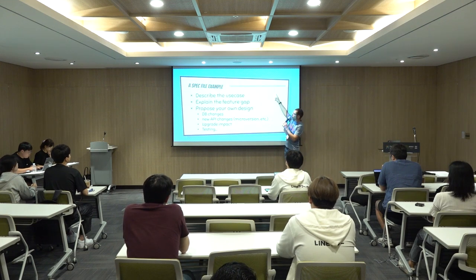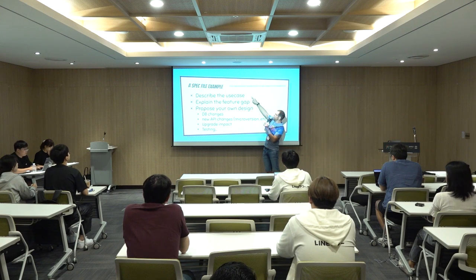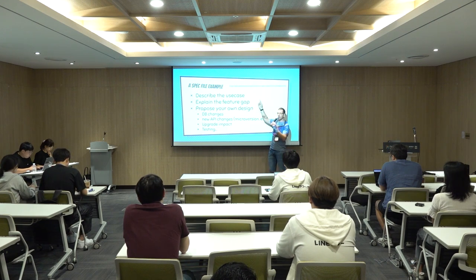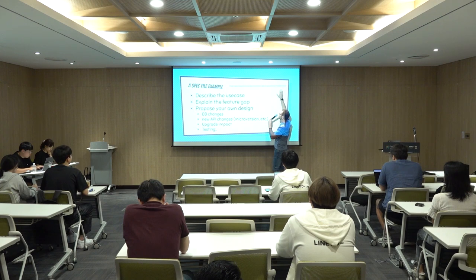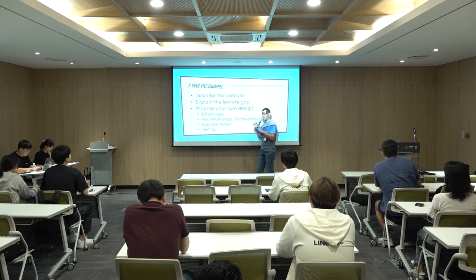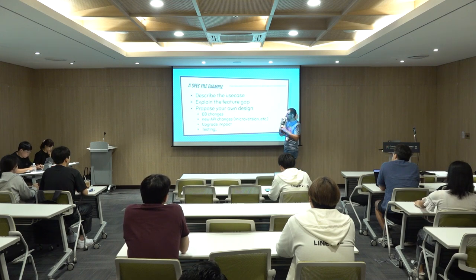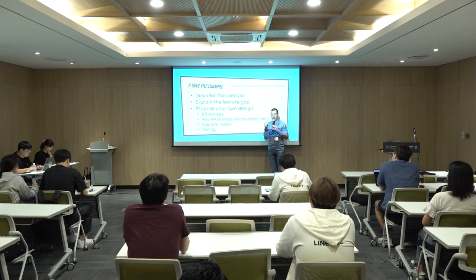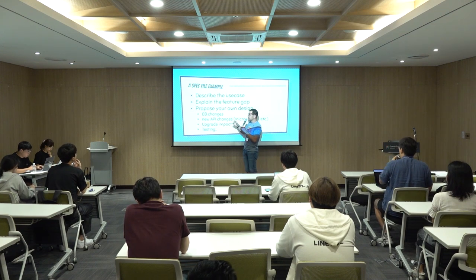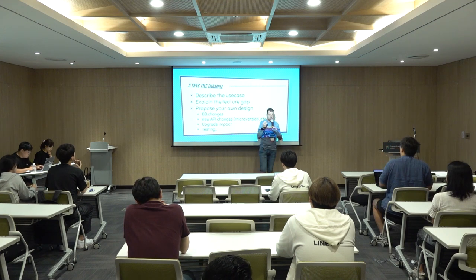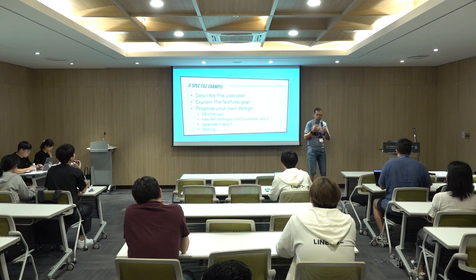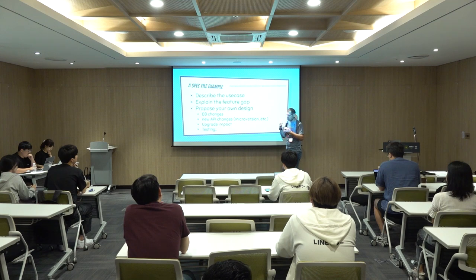I provided an example of the specification file. For every project — not only Nova — you can see spec examples and spec templates in the directory. A specification file is not there just for the sake of having an attached file. It's there because you need to explain why, what, and how you need to change something. 'Why' is about the use case — why do you want to modify Nova? For example, as an operator, I want to get something from Nova. That's a use case.